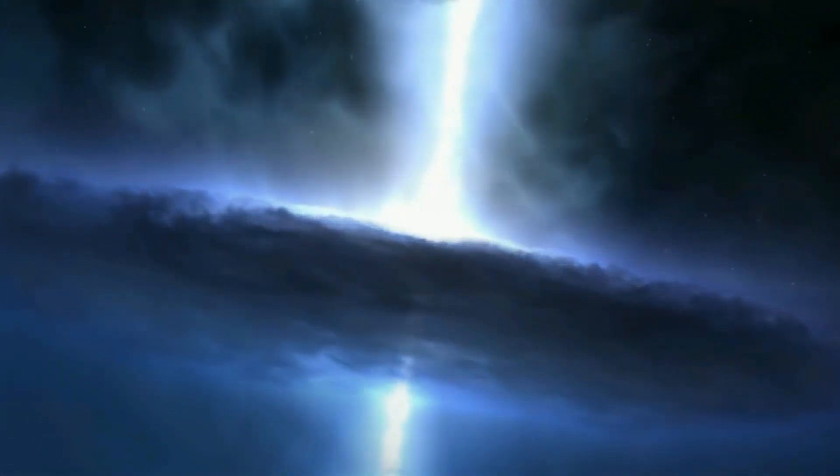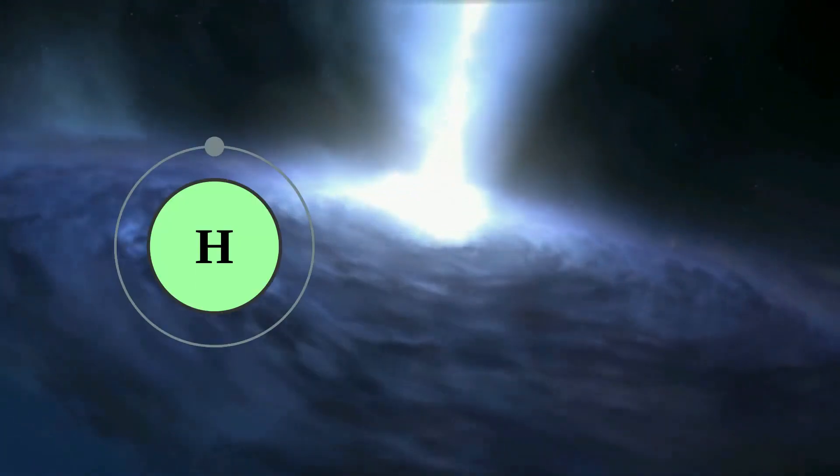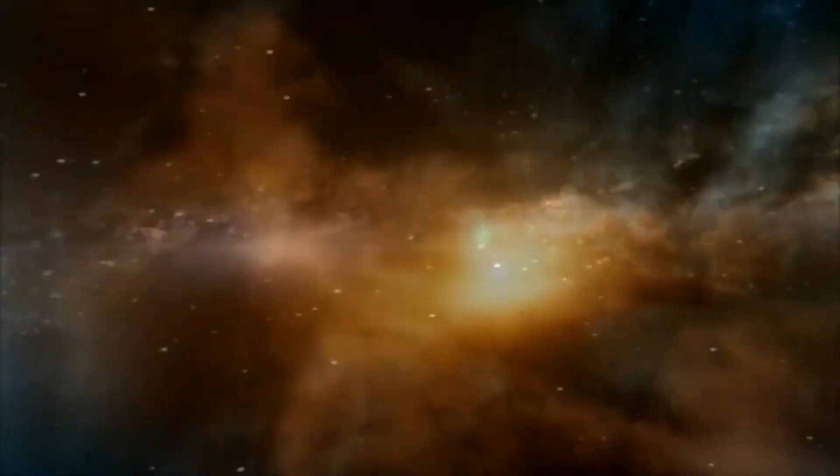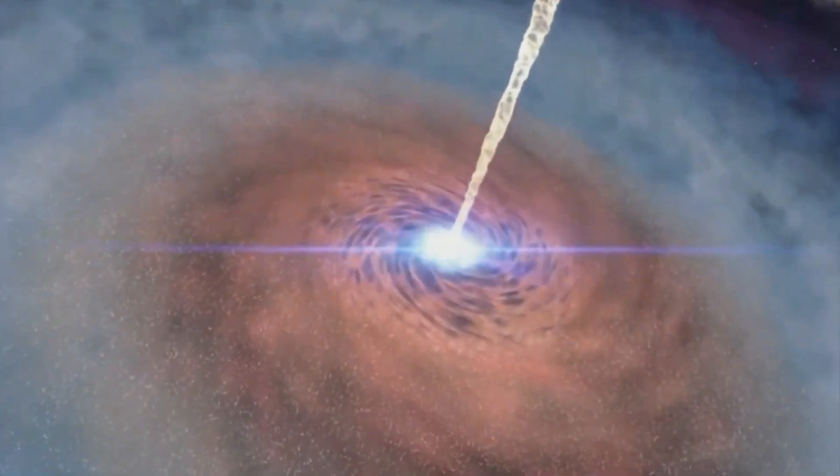The answer lies in the seeds of structure, tiny ripples in the cosmic microwave background radiation that gave rise to the first atoms of hydrogen and helium. These atoms came together to form the first stars, and eventually, the first galaxies, including our own Milky Way.